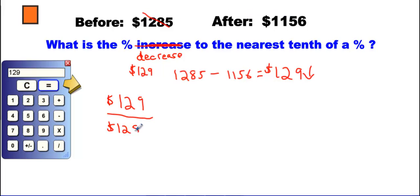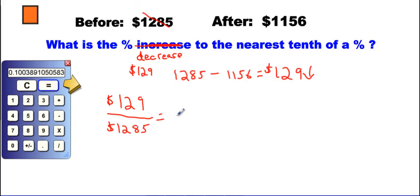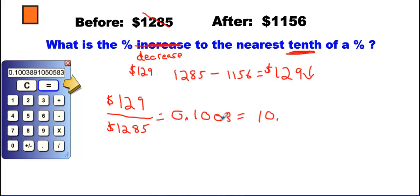Which total do we use? The original — $12.85. So we go 1.29 ÷ 12.85, and we get a decimal value of 0.100. The question asks for the nearest tenth, so we look at the next digit — it's a 3, which is too small — so it stays 0.100. Move the decimal twice to get 10.0%. You must show that tenth place value — writing just '10%' would lose half a mark.